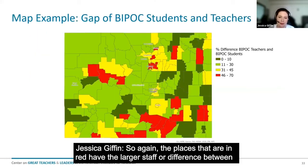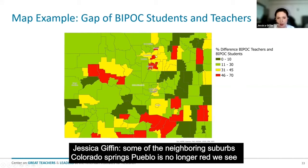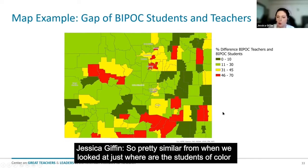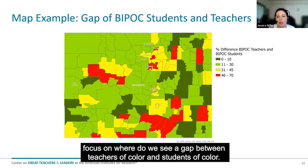The places in red have the largest gap or difference between teachers and students of color. We still see Denver and some of the neighboring suburbs, Colorado Springs — Pueblo is no longer red. We see some of those same districts in the south, but not all of them, and still some in this mountain range. So it's pretty similar to when we looked at just where students of color are, but you're starting to see some differences when we focus on where the gap between teachers of color and students of color is largest.